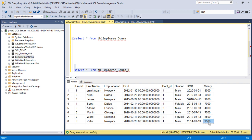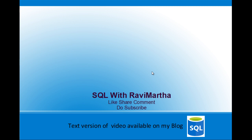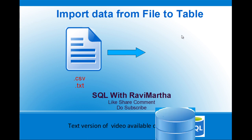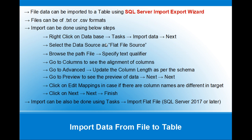This is how we can import data from a flat file to a database table. One option is to right-click on the database, choose Tasks, Import Data, select flat file as source, specify the text qualifier, check column alignment, update the schema in Advanced, preview the data, use Edit Mappings if column names differ, then click Next, Next, and Finish. You can also use the Import Flat File option available in SQL Server 2017 or later.